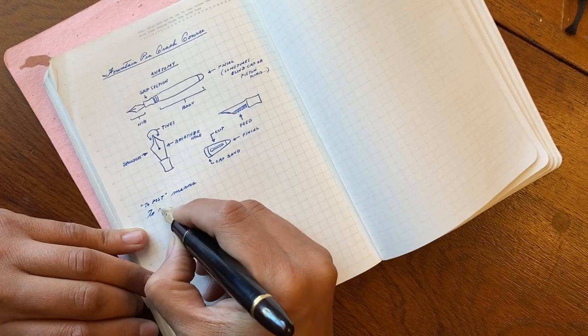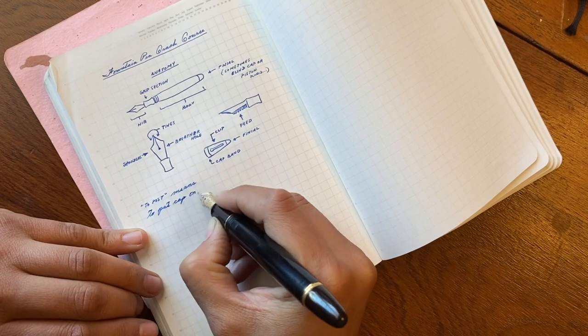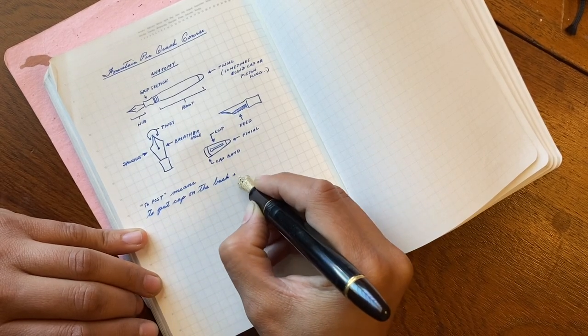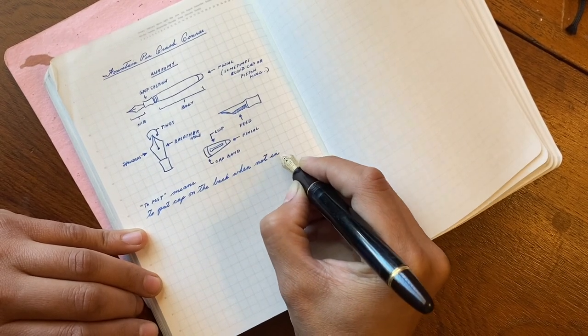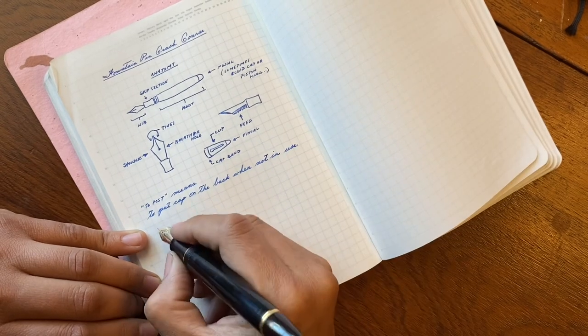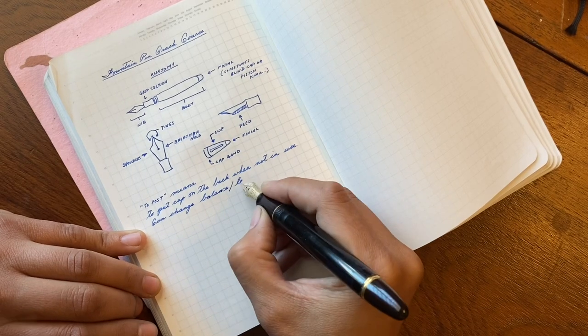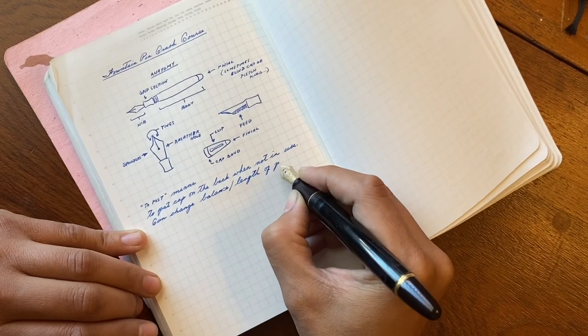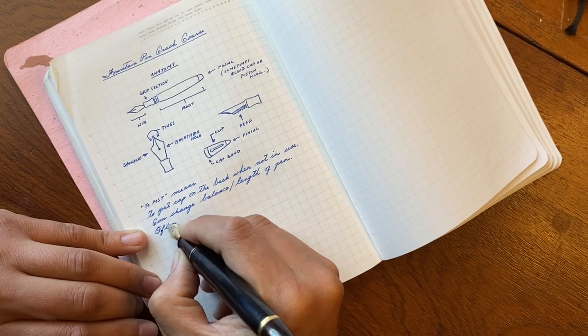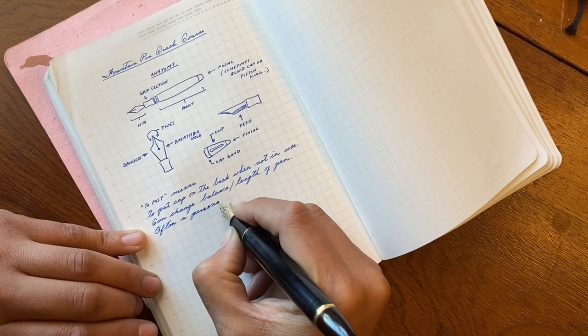To post means to put the cap on the back of your pen. This is a personal preference. It will change the balance of the fountain pen, often it will make it longer. Some people are worried about the cap scratching their pen bodies, so everybody has kind of a different preference.